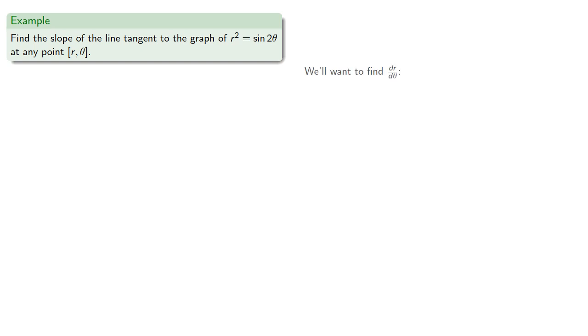Now it turns out we'll want to find dr d theta. Since r squared equals sine 2 theta, we can find dr d theta using implicit differentiation, which will give us... Again, y of theta, we'll assume that's r of theta sine of theta, so y prime will be... And we know what r prime of theta is, and so we can replace...